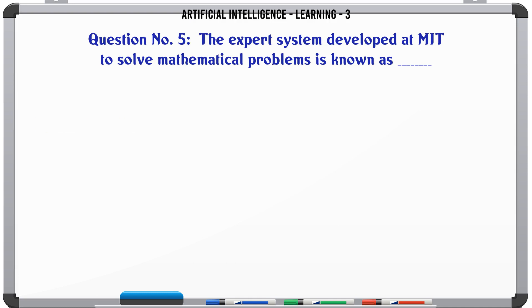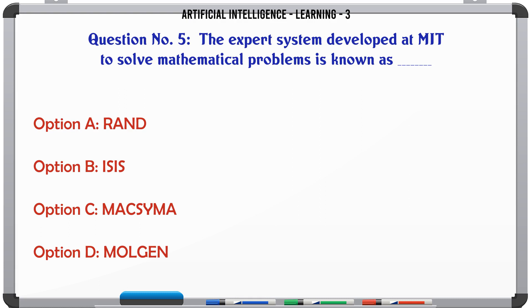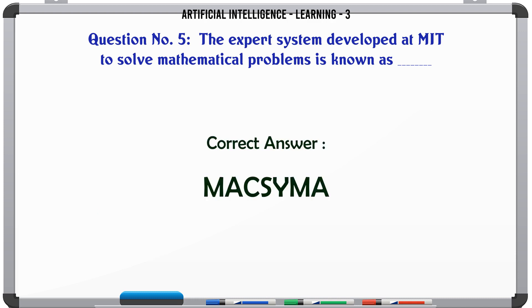The expert system developed at MIT to solve mathematical problems is known as: Option A: RAND. Option B: ISIS. Option C: MACSYMA. Option D: MOLGEN. The correct answer is MACSYMA.